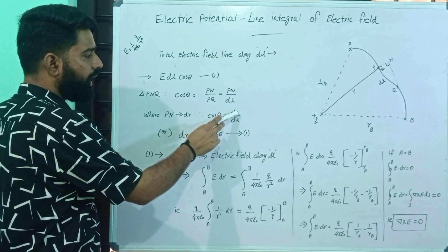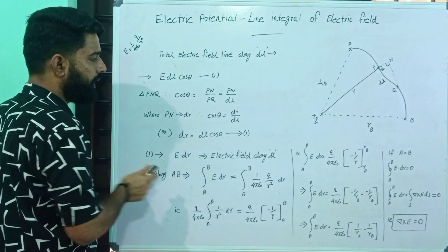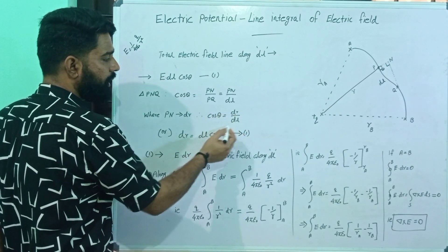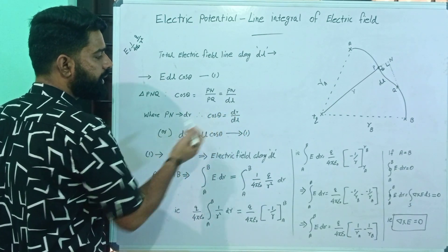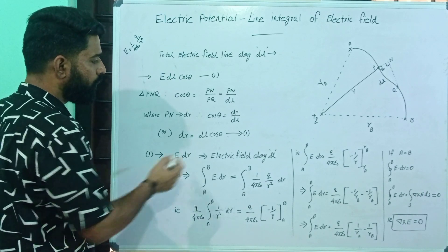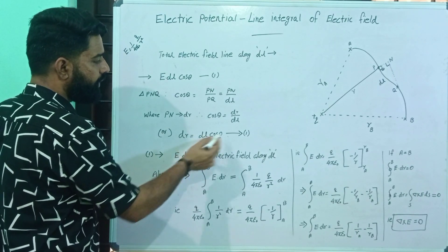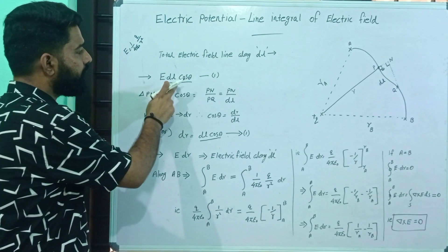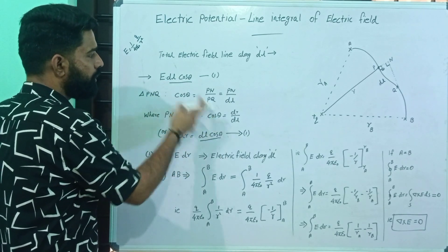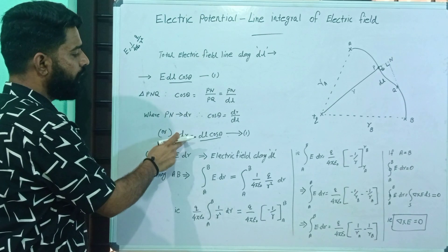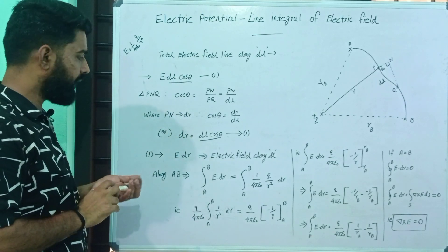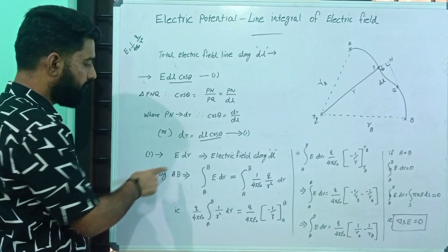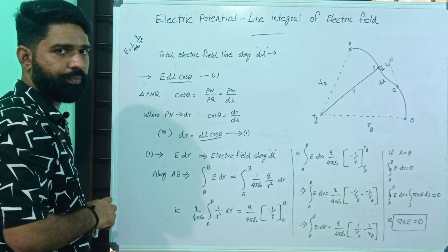So cosθ = dr/dL, which gives dr = dL·cosθ. Substituting this into equation 1: E·dL·cosθ becomes E·dr. So E·dL = E·dr along the path.